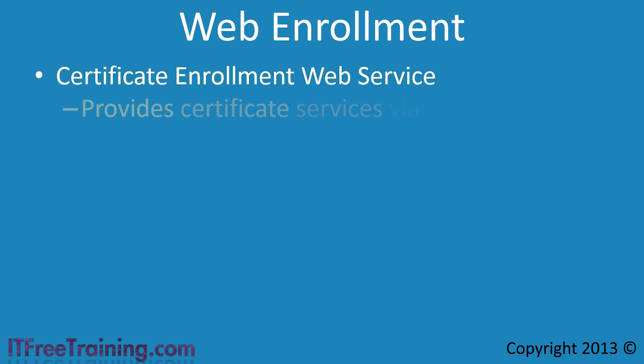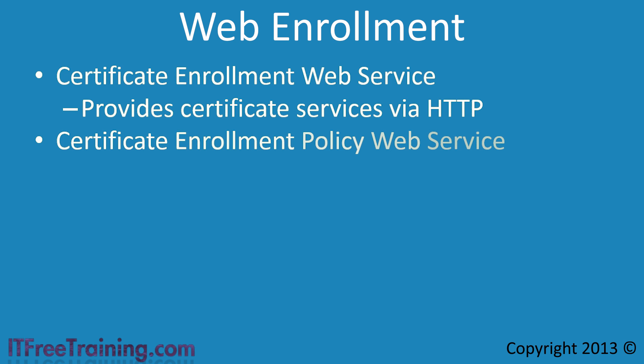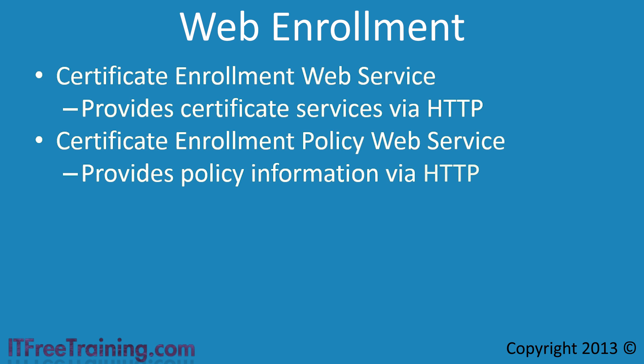The last three components all relate to Web Enrollment, so I have grouped them together. The first, Certificate Enrollment Web Service, allows clients to obtain certificates using the HTTP protocol. This means a client could obtain a certificate using the web service even if it is not a member of the domain — useful if you have a business partner that needs certificates but you do not want to give them direct access to the certificate authority. It should be noted that this component does not provide a web interface. The next component, Certificate Enrollment Policy Web Service, works hand in hand with Certificate Enrollment Web Service, providing policy information to clients using HTTP. Policy information gives the client information about the certificates used in the organization.